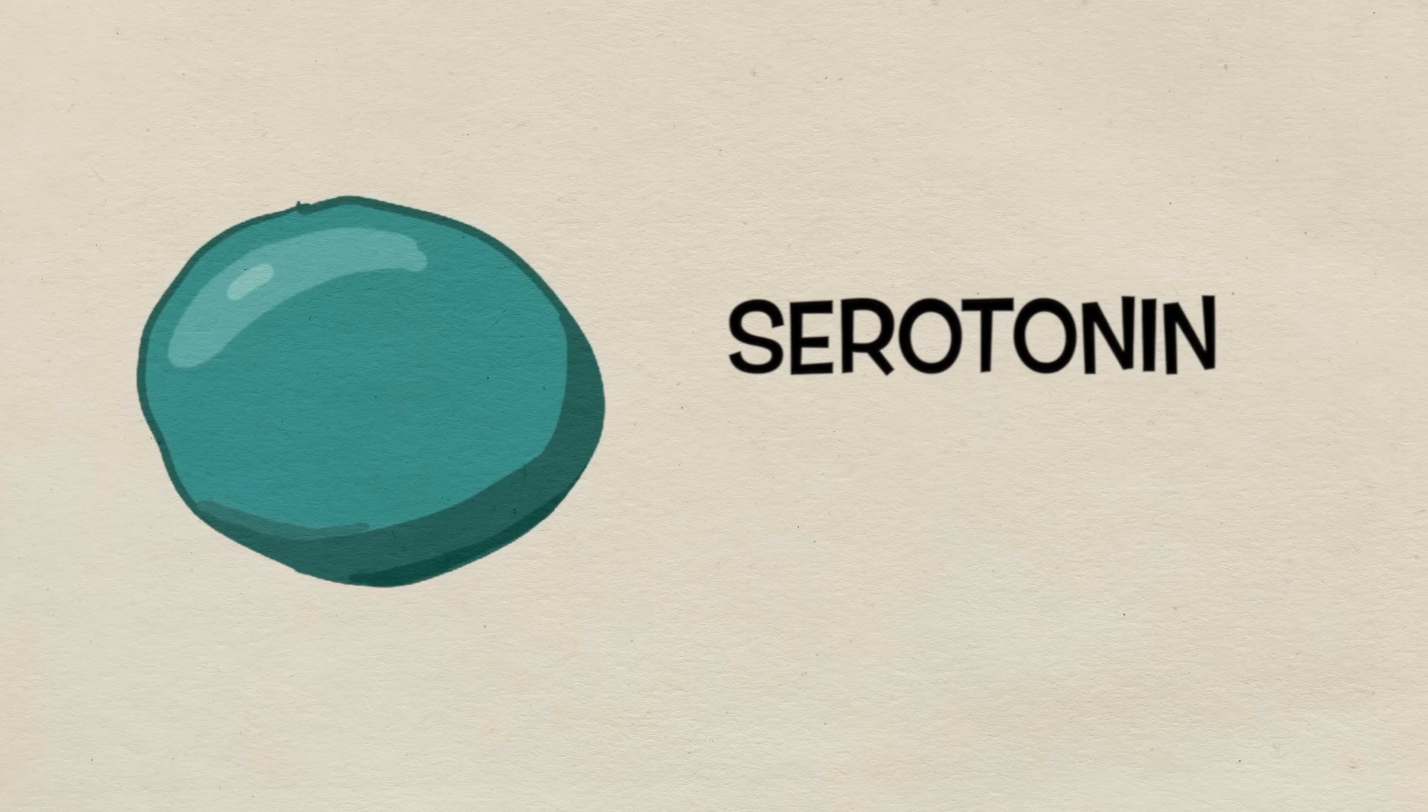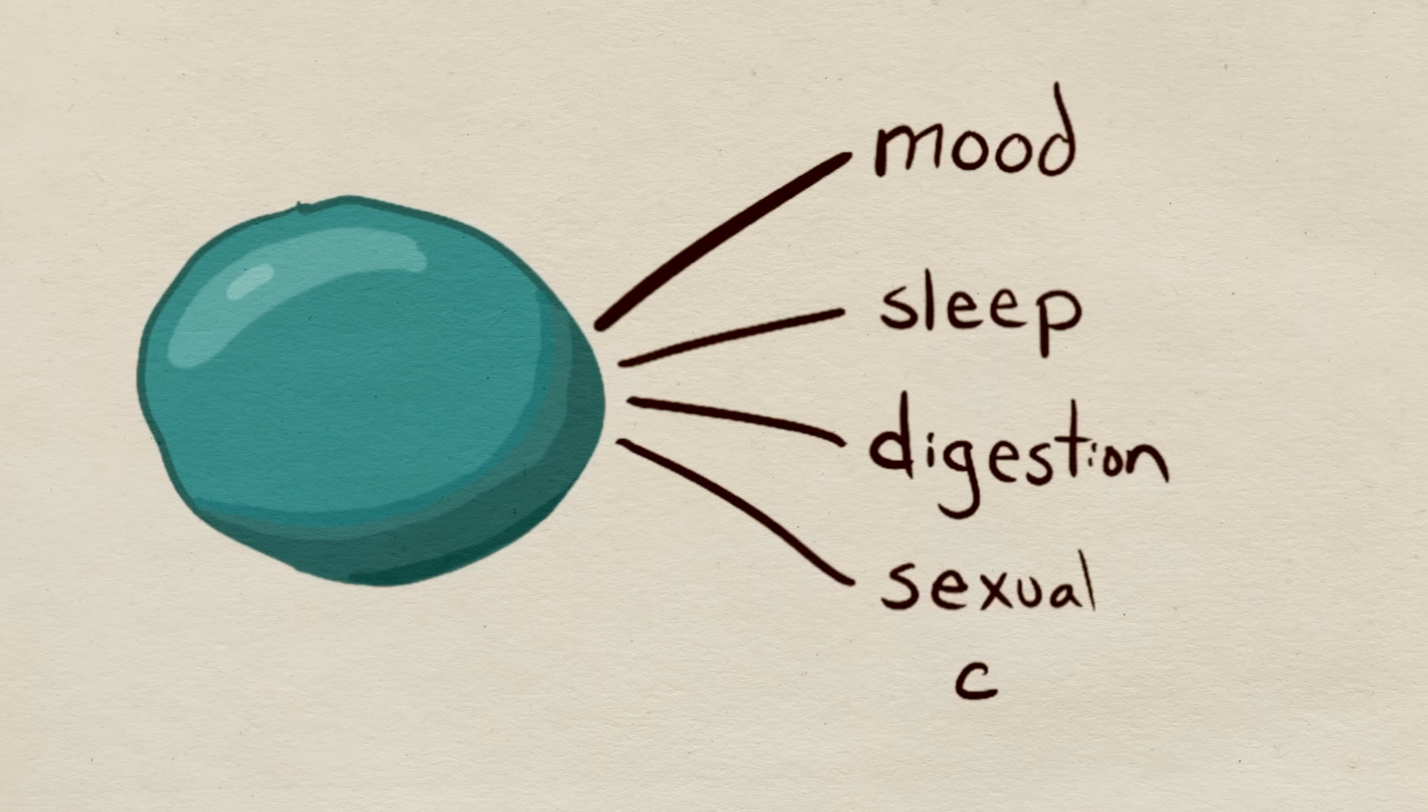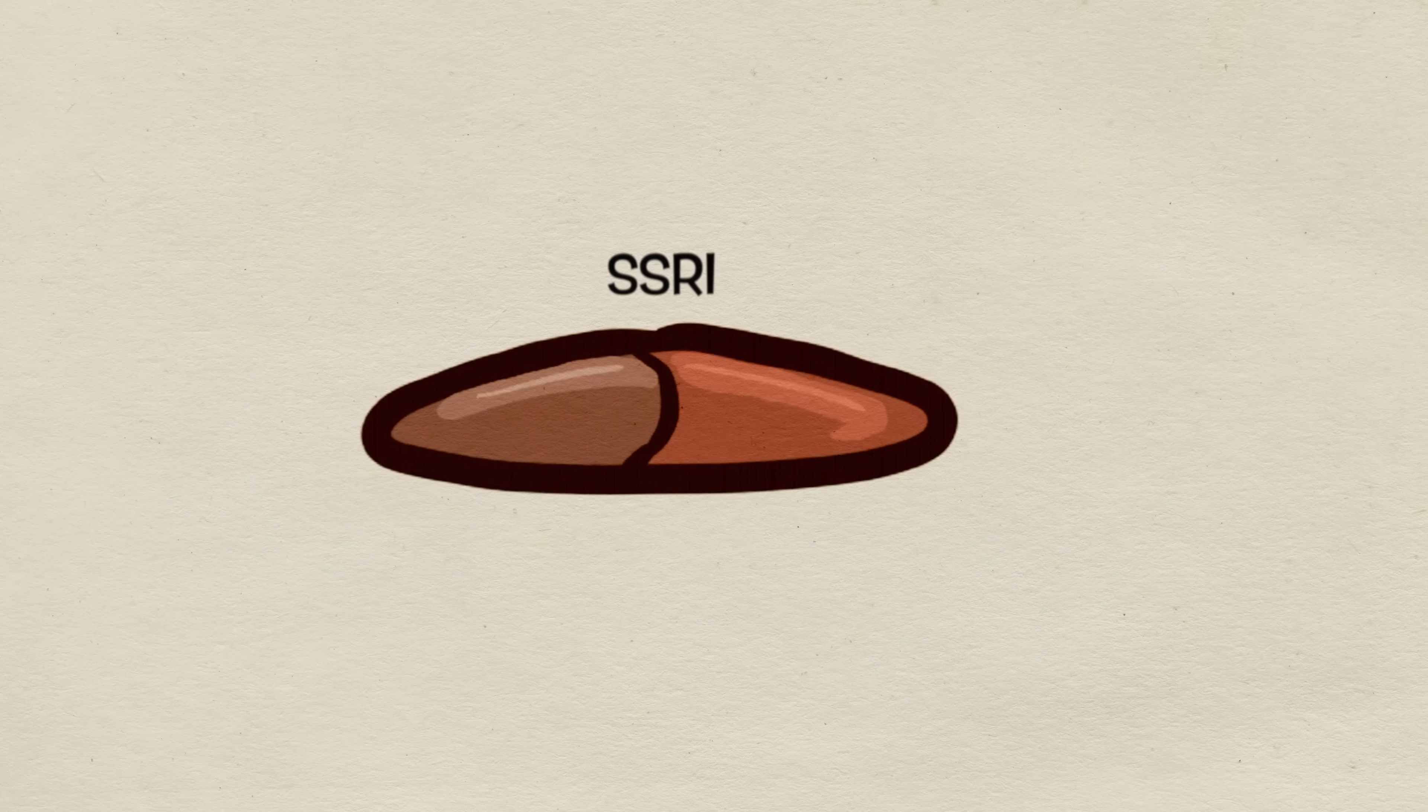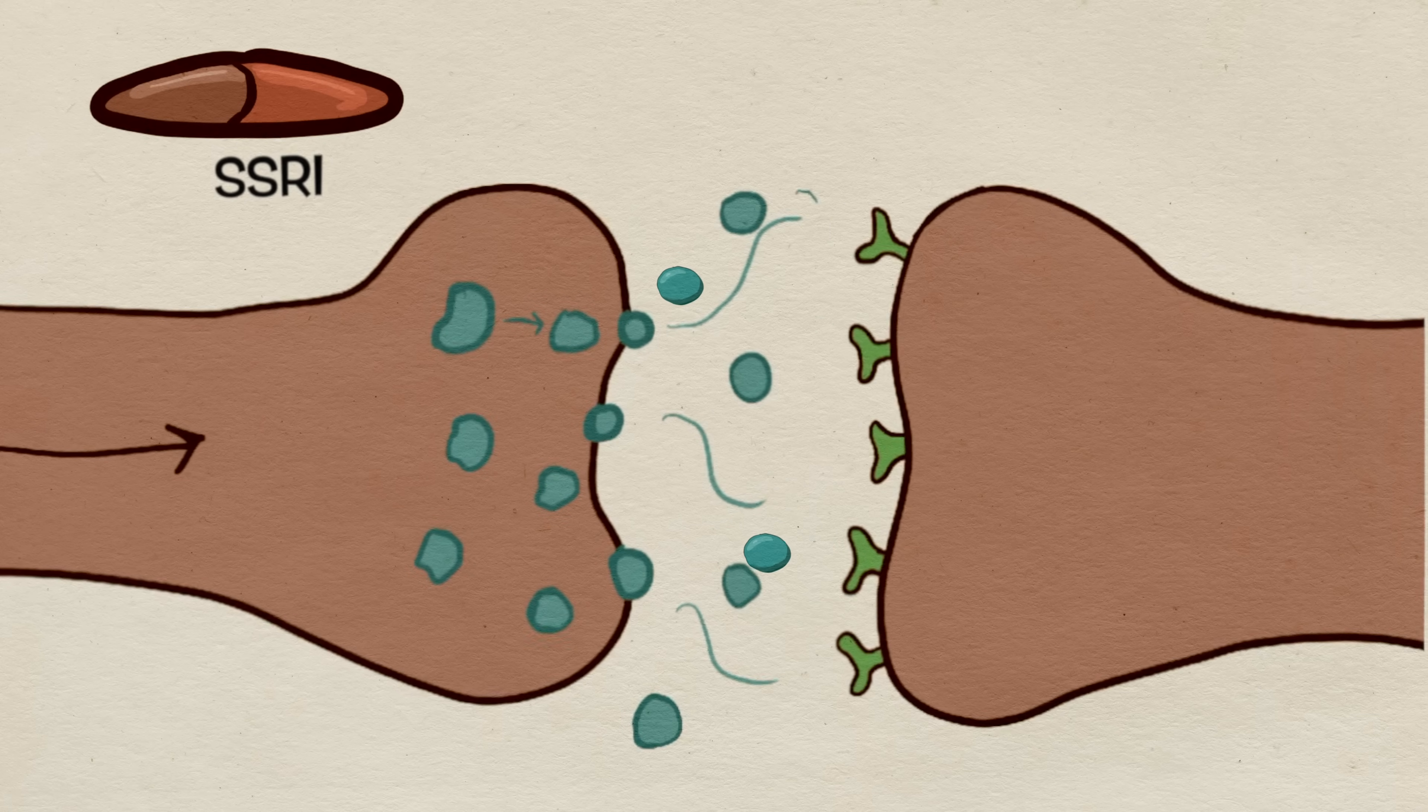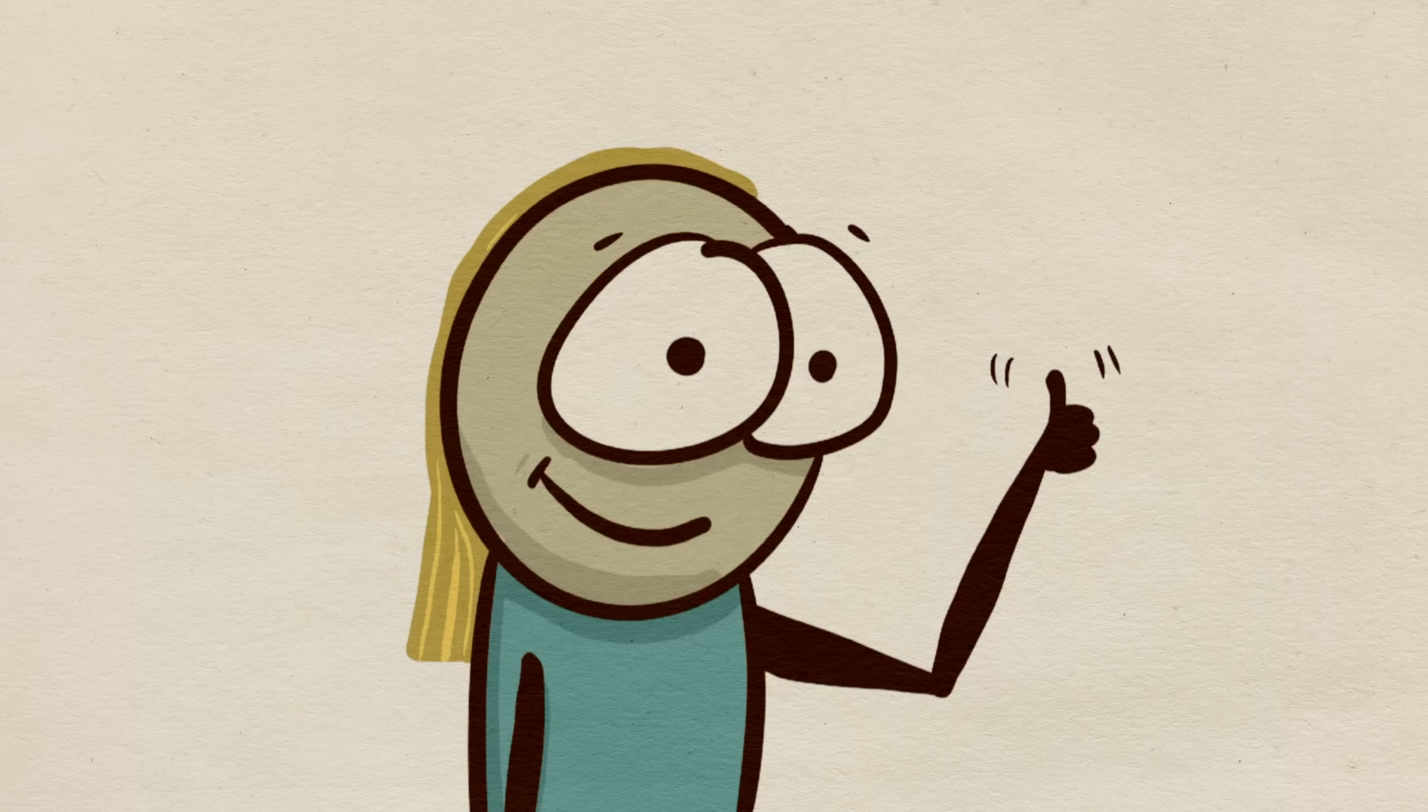Serotonin, as a neurotransmitter, plays a key role in your mood, sleep, digestion, and sexual desire. You may also know that a lot of antidepressants, like SSRIs, work by preventing serotonin from being taken back up, and thus it increases the amount of serotonin in the system. This helps people feel better, at least temporarily.